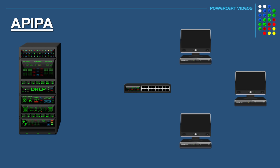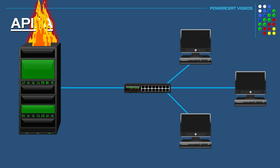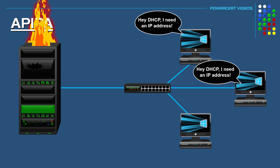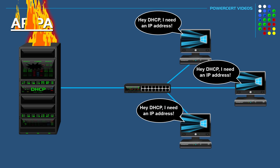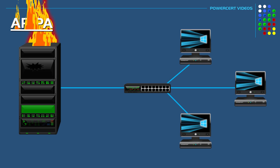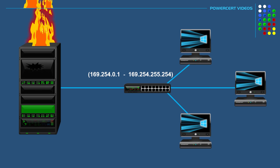Step by step: let's say in this office we have three computers all connected to a switch that's connected to the DHCP server. If the DHCP server cannot be reached — whether due to a malfunction, a disconnected cable, or maybe the server caught on fire — when we turn on these computers they will ask the DHCP server for an IP address. Since the server can't be reached, the computers will self-assign their own IP address from the 169.254 range. IP addresses must be unique for each computer.